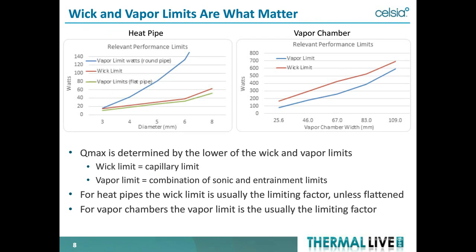Looking at performance charts: on the left are heat pipe performance limits by diameter, and on the right vapor chamber limits by width. The blue line shows the vapor limit; the red line shows the wick limit. The wick limit is the limiting factor until you start to flatten heat pipes — once you flatten them, the vapor limit generally comes down in line with the wick limit. For ultra-thin devices, optimizing the sweet spot between wick limit and vapor limit is key. For vapor chambers, the wick limit is above the vapor limit because they are flattened devices and the vapor space is smaller in a rectangular device versus a round one.